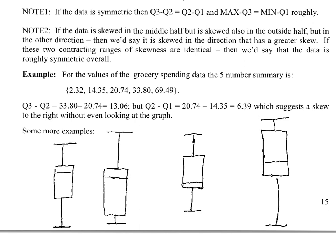Beginning with the first example, within the interquartile range we see that the lower or left side of the left quartile is much more spread out than the right one. This indicates that there is left skewness in the interquartile range. Looking at the whiskers, we see that the left whisker is about the same as the right whisker, maybe a little longer. So we'll say the whiskers are left skewed. Overall, the distribution would be left skewed.